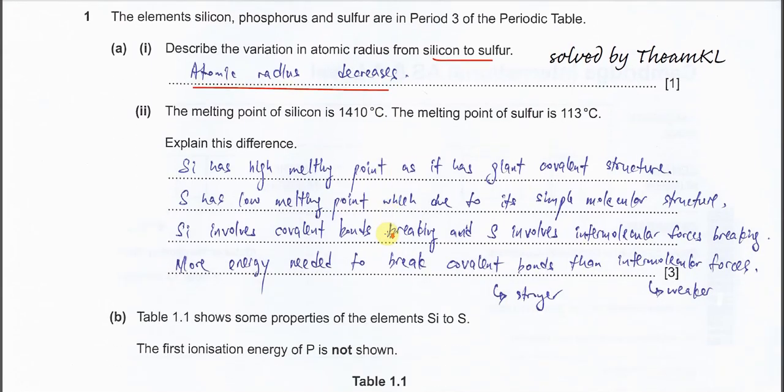Part 2. The melting point of silicon is 1410°C and sulfur is 113°C. Explain this difference. First, you need to explain their structure, whether it's giant or simple. Normally, high melting points indicate giant structure, and low melting points indicate simple structure. For silicon, it's group 14, similar to carbon, so it has a giant covalent structure.